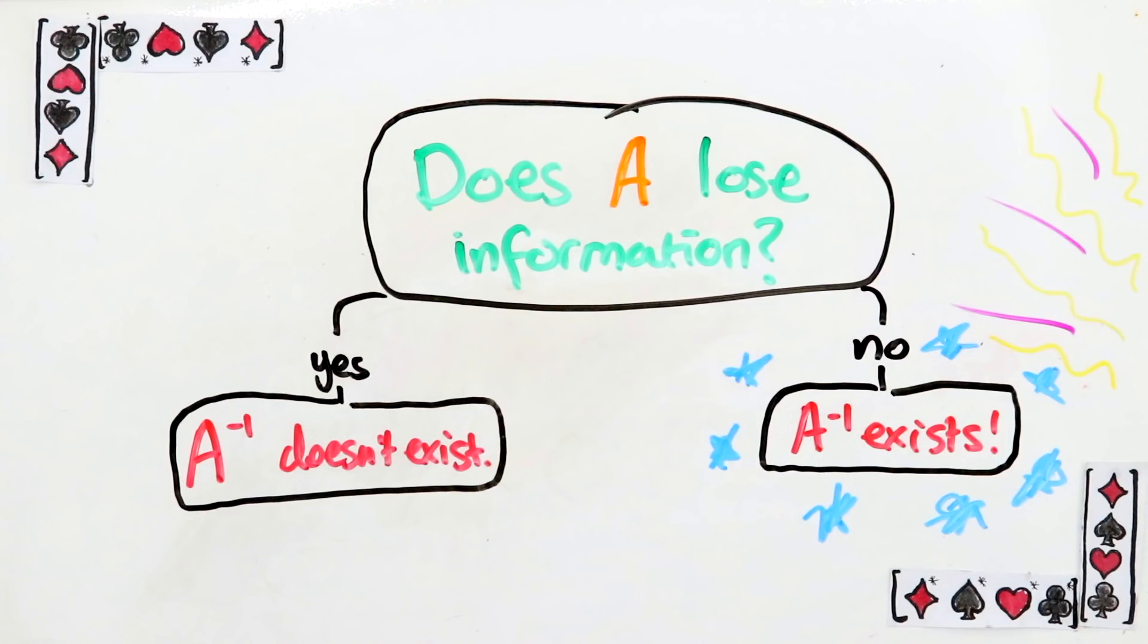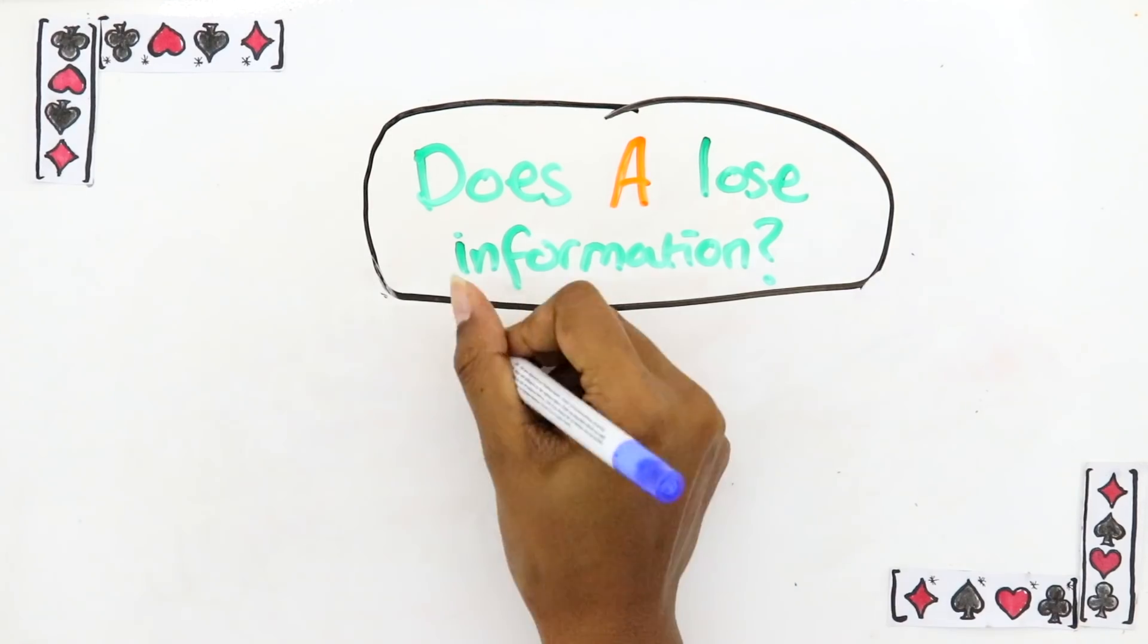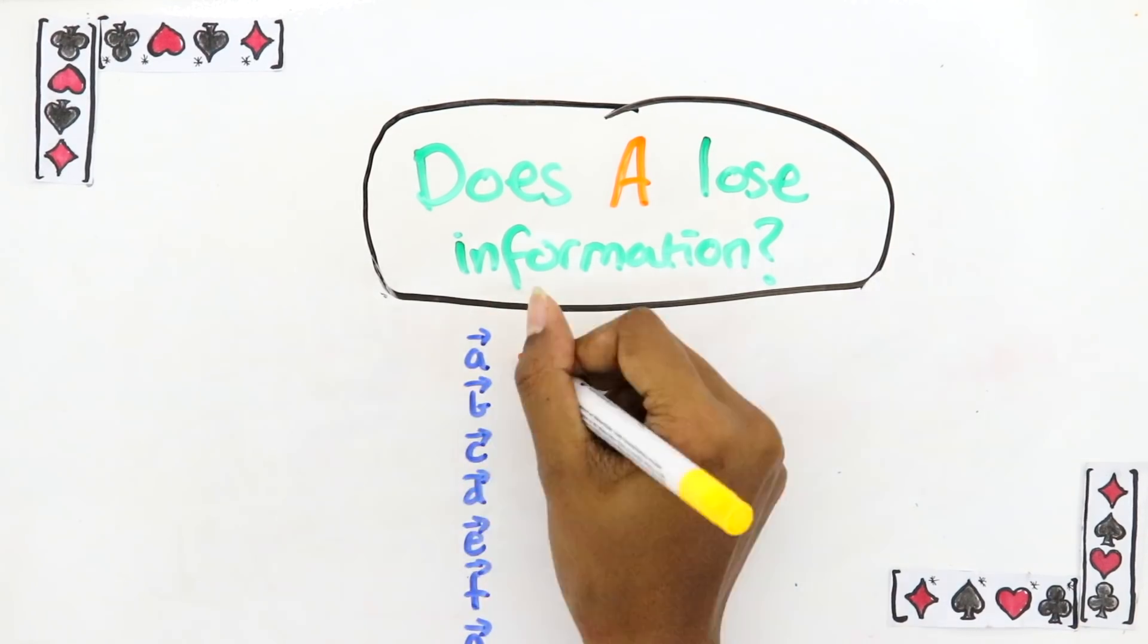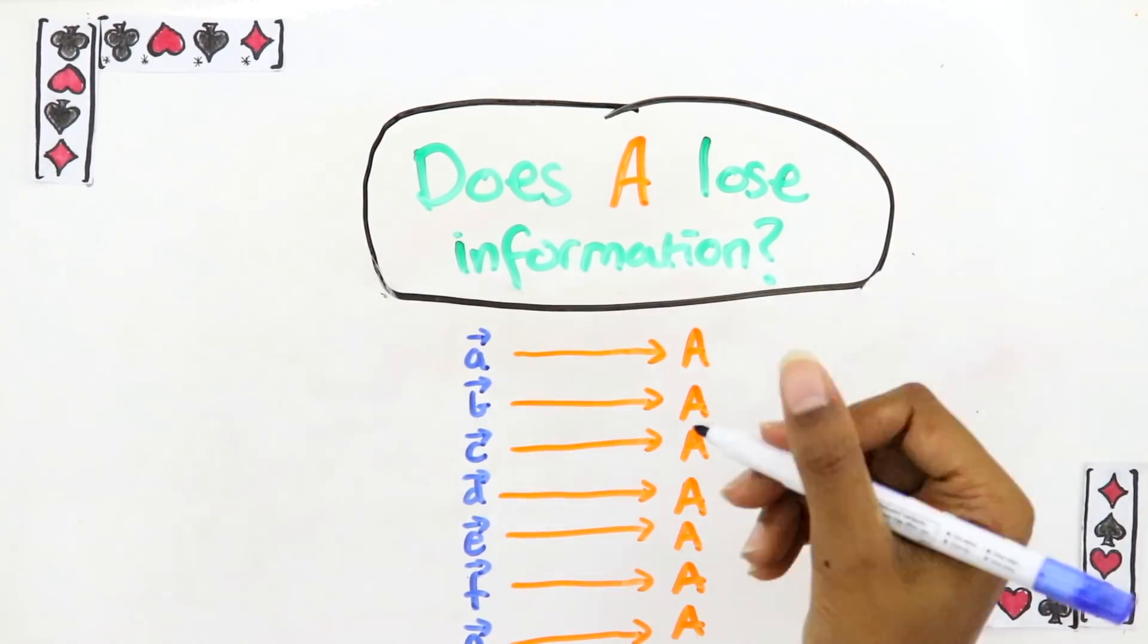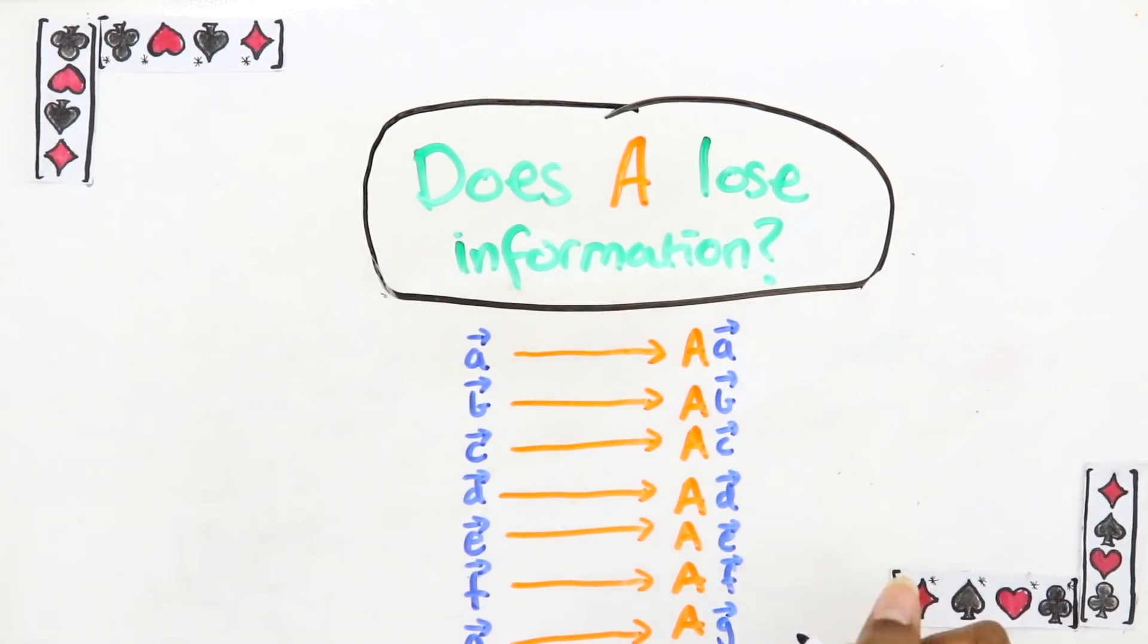You might be thinking, okay, so what? How is this easy to check? Wouldn't you have to compute the outcome of every single vector that goes into M and then compare the results to every other vector and see if any of them match? Isn't that beyond tedious?